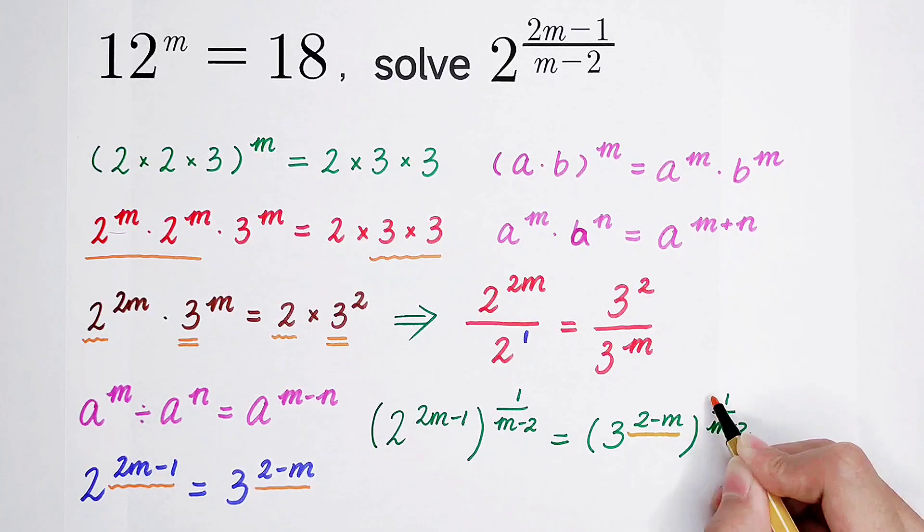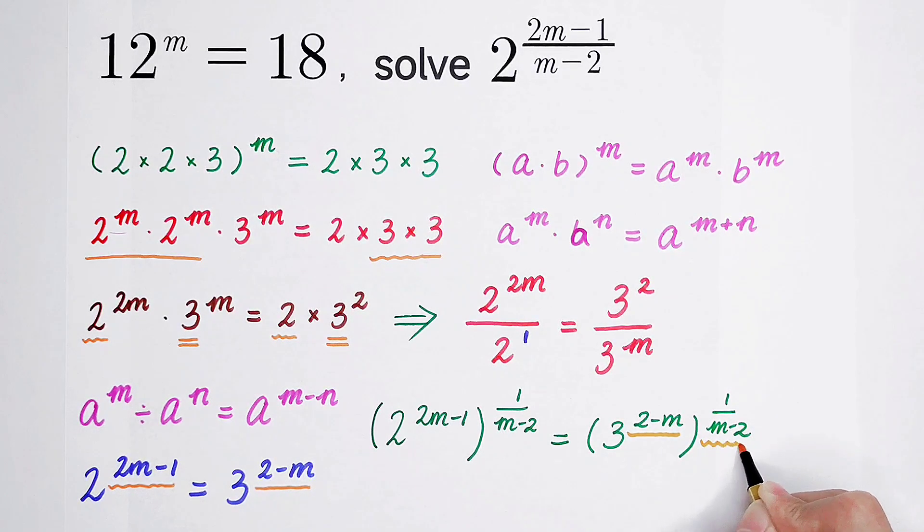So now I just get the multiplication of this. 2 minus m and 1 over m minus 2. So the multiplication of them is the new power. And the base is 3. So the multiplication of 2 minus m and 1 over m minus 2, that is minus 1.